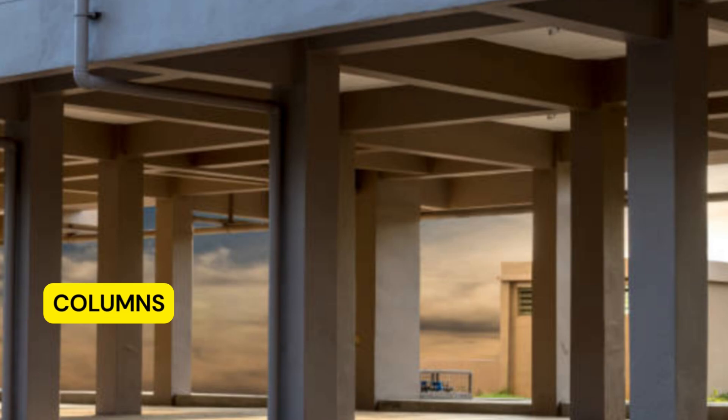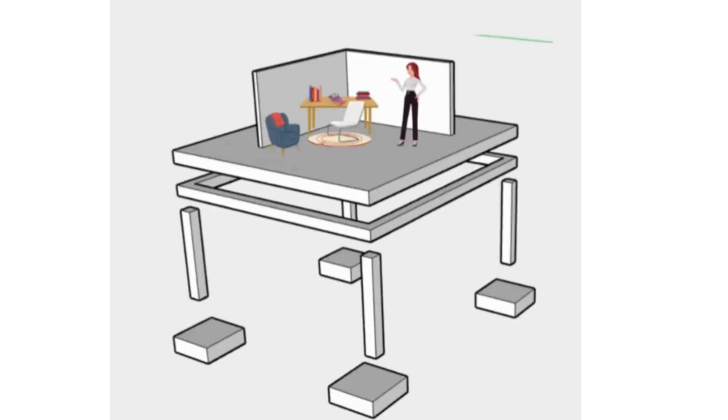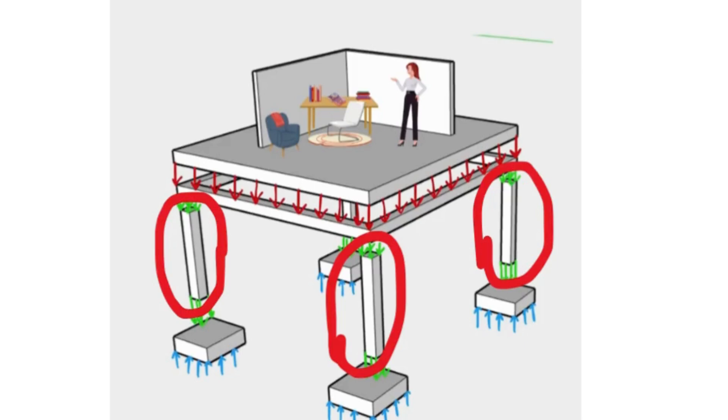For example, columns are in compression because they carry the weight of the slabs, beams, and the structure itself.